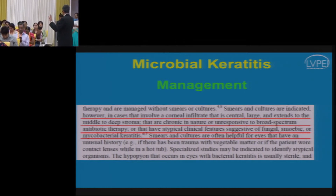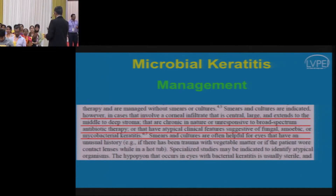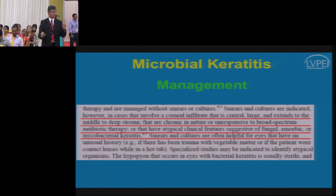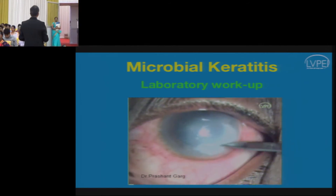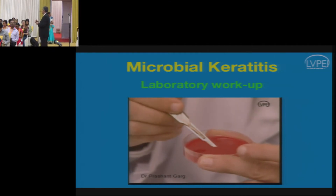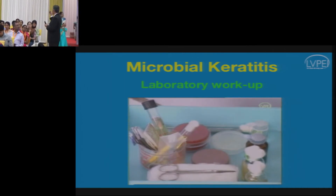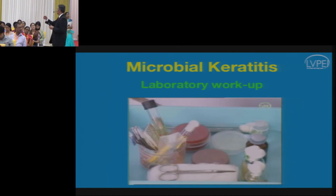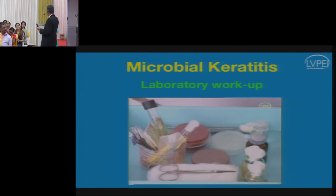To summarize microbiology indications: large, central ulcers with posterior one-third stromal involvement or atypical features warrant microbiology workup. For corneal scraping technique, use a number 15 surgical blade or Kimura's spatula. Sharp instruments like a 26-gauge needle or number 11 blade risk corneal perforation since the cornea is necrotic. The blunt end of a number 15 blade or Kimura's spatula scrapes the surface safely without perforation risk.